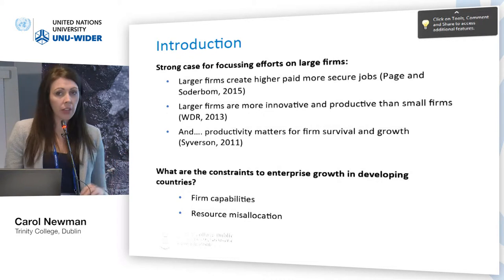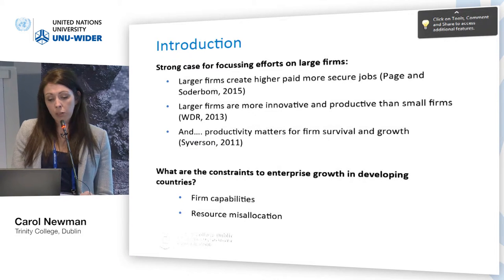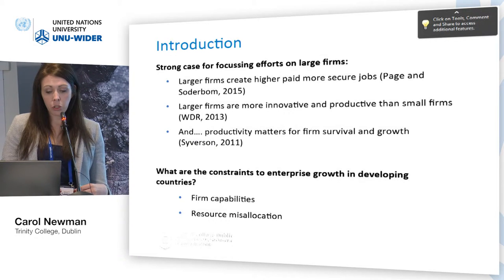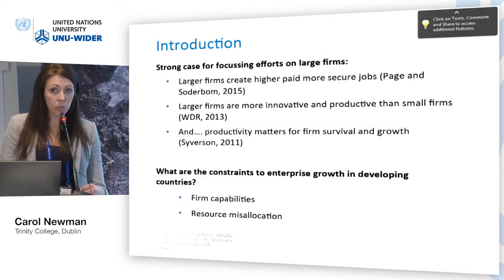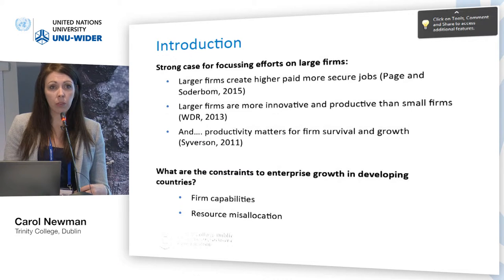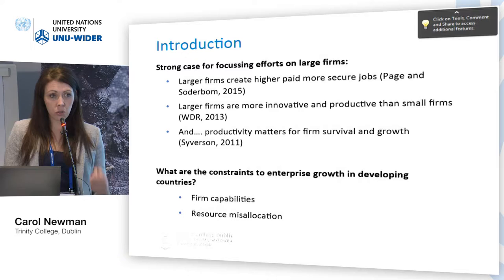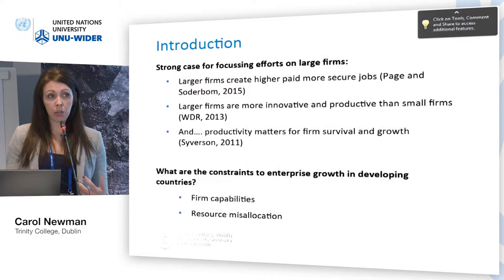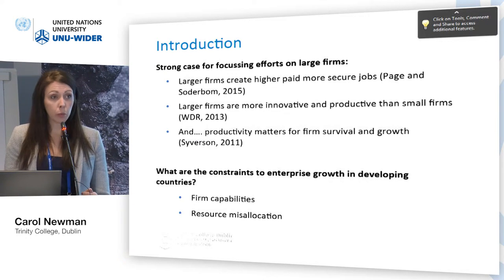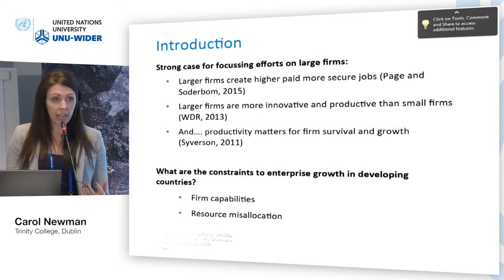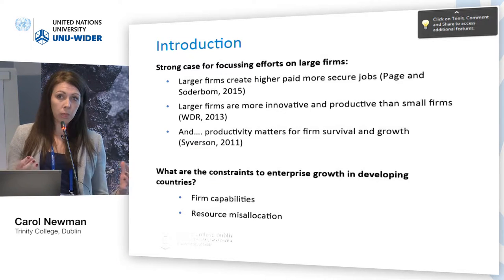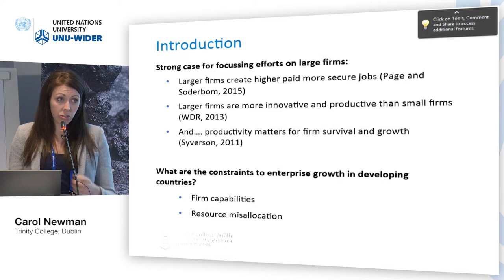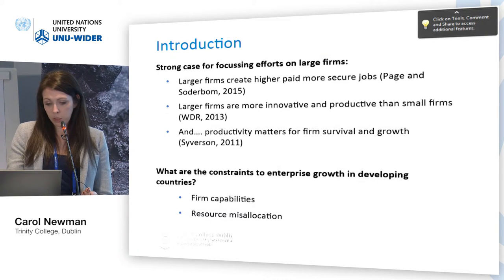The second area I want to look at quite briefly, because it is new work, relates to resource misallocation — the misallocation of labour and capital resources — and the existence of distortions in the economy that prevent labour and capital from going to the most productive firms. This is evidenced by the very wide dispersion in productivity we see among firms in developing countries, a dispersion much wider than in developed countries.